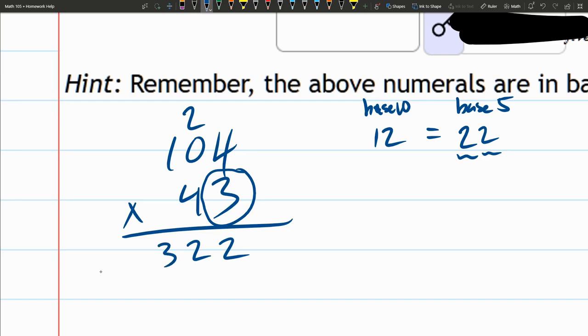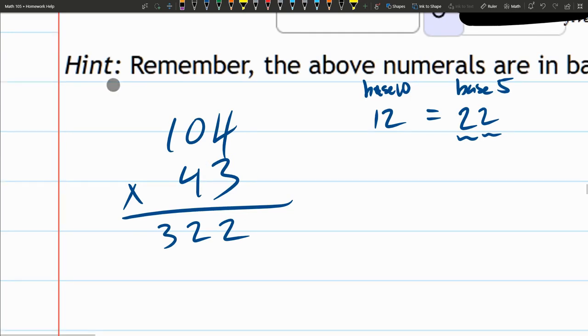Next up we're going to do the same thing with the 4. So 4 times 4 is 16. 16 has several fives, 16 has three fives in it.